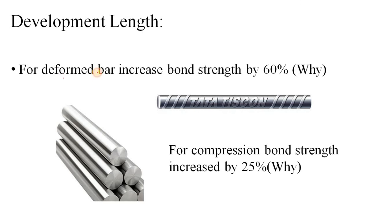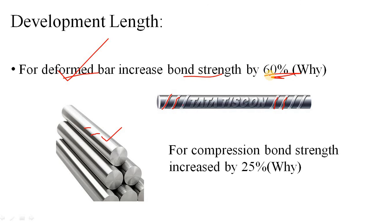There are additional criteria for development length. First, if you use a deformed bar — a bar with ribs — compared to a mild plain bar with no ribs, the ribs provide extra friction and encourage more bond within the concrete. Therefore, the bond strength is increased by 60 percent. Nowadays in construction, deformed bars are normally used, so you apply bond strength increased by 60 percent in that case.